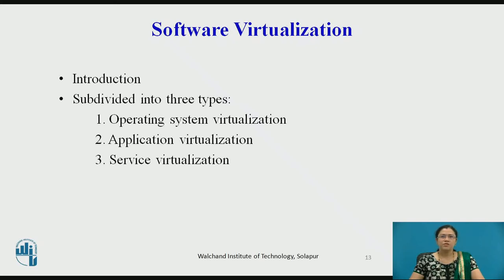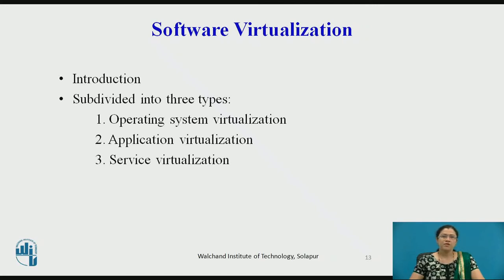Software virtualization provides the ability for a main computer to run and create one or more virtual environments. It is used to enable a complete computer system in order to allow a guest operating system to run — for instance, letting Linux run as a guest on a natively running Microsoft Windows OS. The different types of software virtualization include operating system, application, and service virtualization.